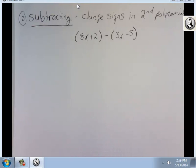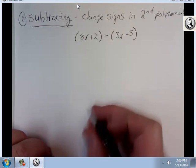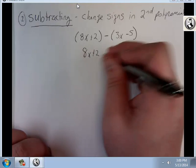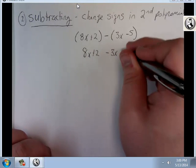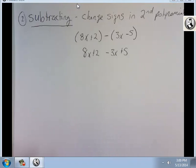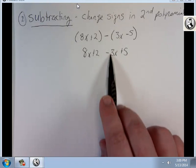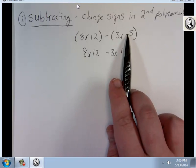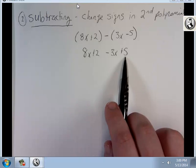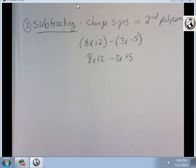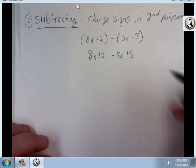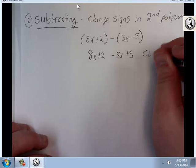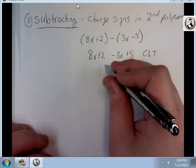8x plus 2 minus 3x minus 5. I can actually break down those parentheses by changing the signs on everything in this second set of parentheses. So I have my 8x plus 2 minus 3x plus 5. The 3x starts as positive, now it's negative. The 5 starts as negative, it's now positive. And then I can CLT just like normal. 8x minus 3x is 5x. 2 plus 5 is plus 7.